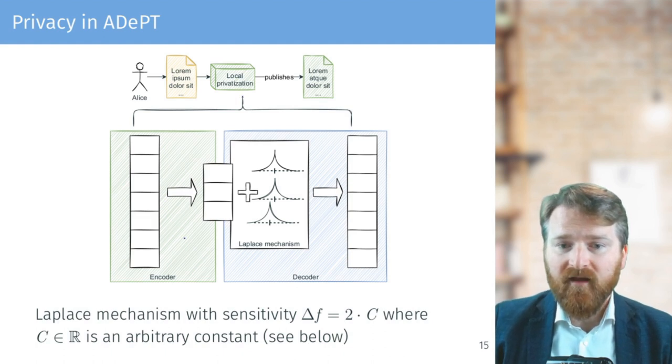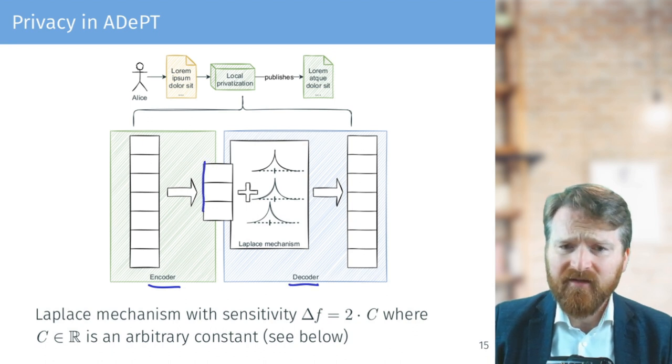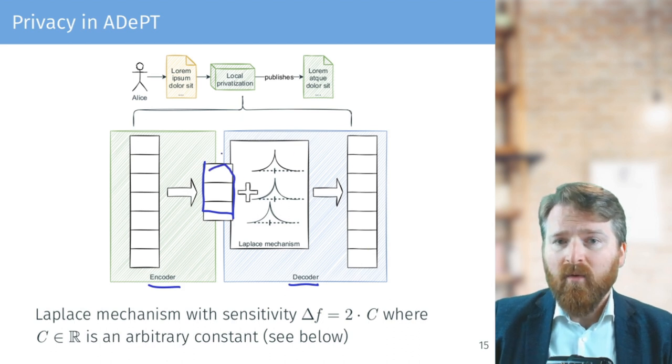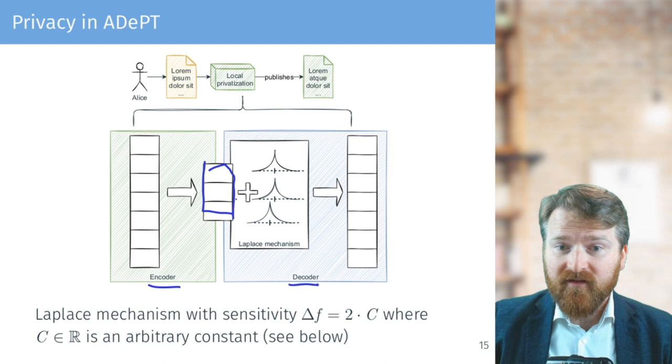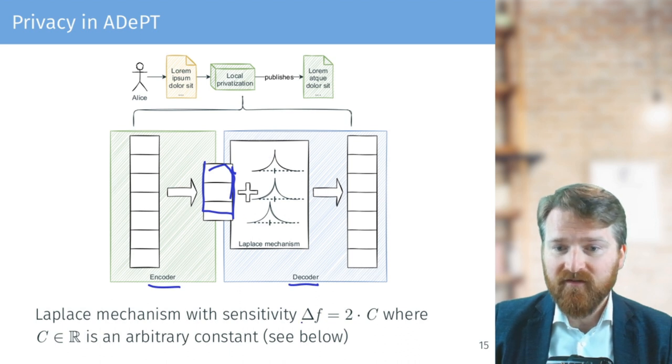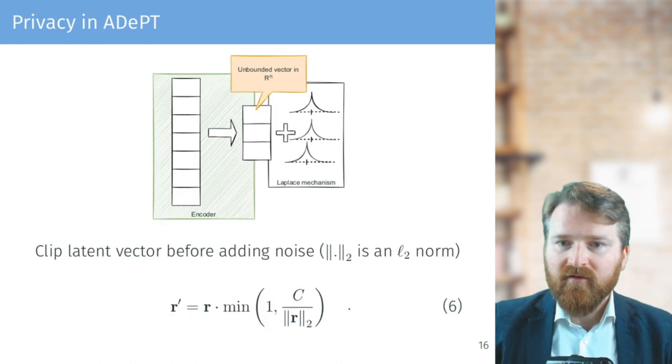How AdePT achieves that in this local privatization is the encoder-decoder architecture. So it's a standard architecture: we get an input text, get some latent representation here, and decode back to text. Where privacy comes into place is basically here in this latent representation by adding Laplacian noise, which we already know. And AdePT determines the sensitivity of adding the noise being C, some constant which we will see later. So far, so good.